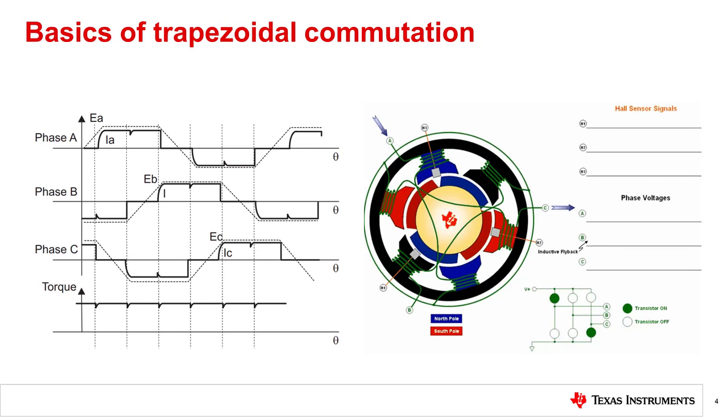In practice, we cannot instantaneously change the phase current from low to high. There will be transient periods of rise and fall times that will generate ripples at the output, which will coincide with each phase switch. This causes a ripple in the motor's output torque.